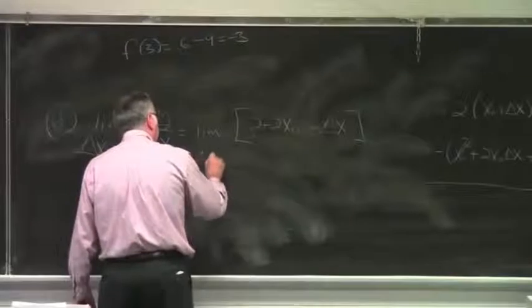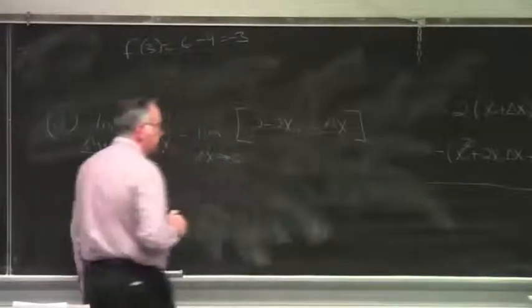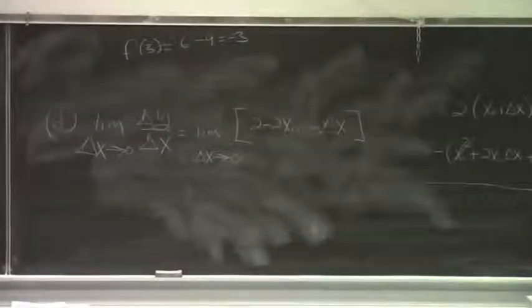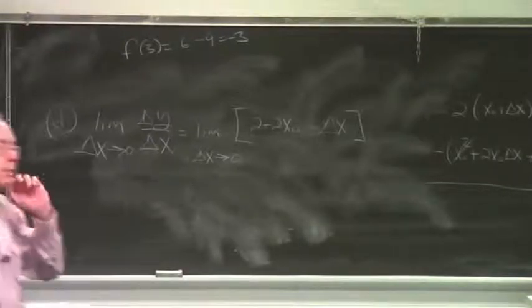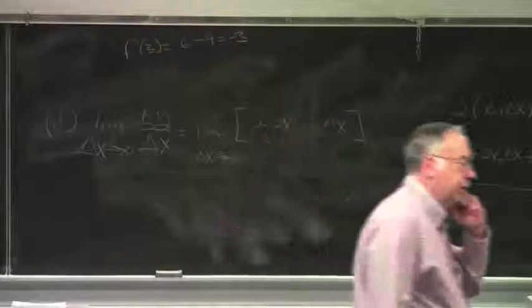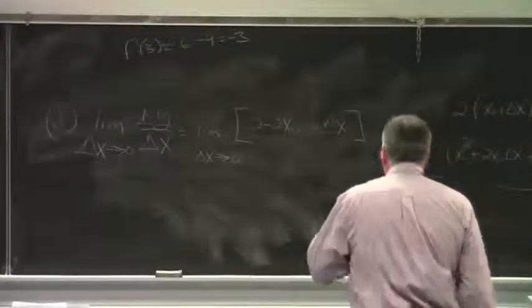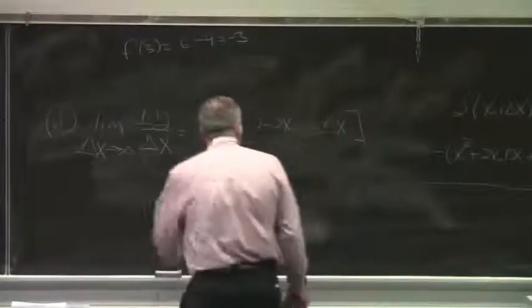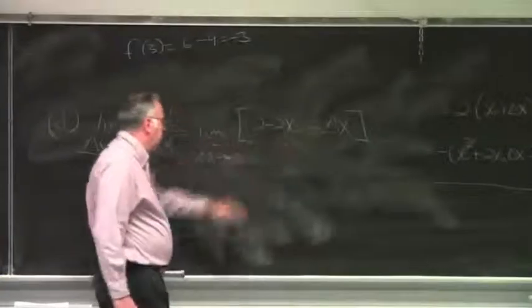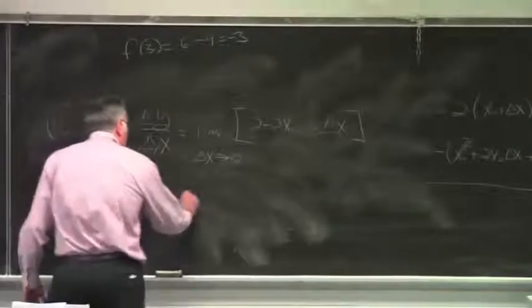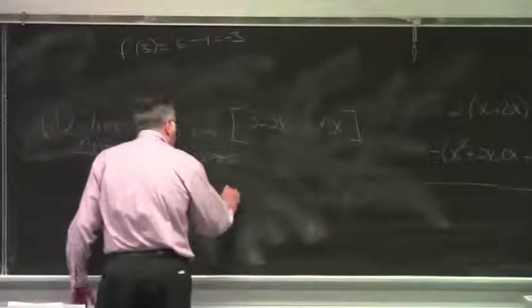Limit of that as delta x goes to zero. And what is the limit of that expression in brackets as delta x goes to zero? Anybody? Speak up. 2 minus 2x. Rebecca? Yeah. It's just 2 minus 2x. We're using x₀ here, so it's just 2 minus 2x₀.